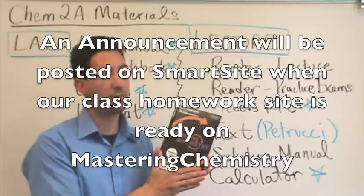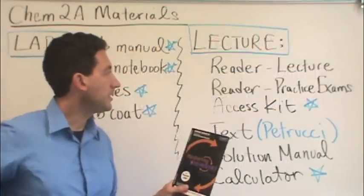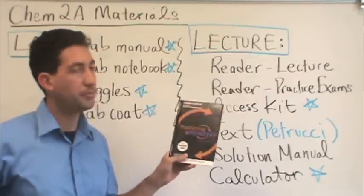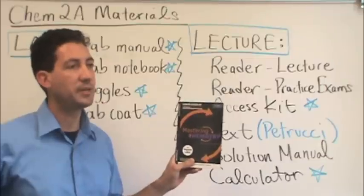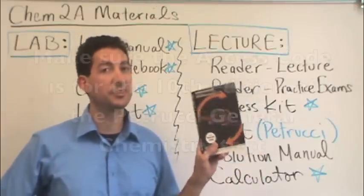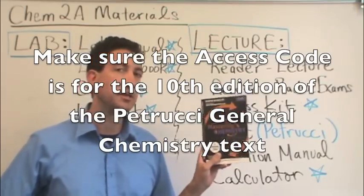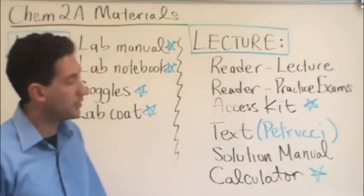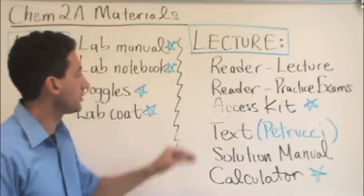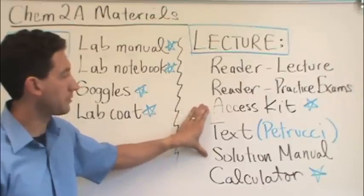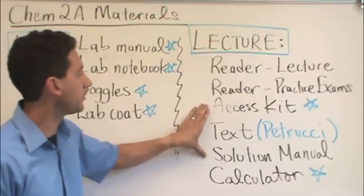and literally that's what it's in here. If I'd open it, it's a long number that allows you to use mastering chemistry. As the quarter approaches, I'll set up the mastering chemistry homework online so you can access it, but before the quarter starts, that won't be ready for you. The access kit, you can get in the bookstore or purchase it bundled with your book for a slightly cheaper price. It's probably the best way to get it. You can get it on Amazon or other places online.